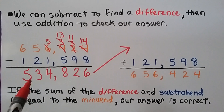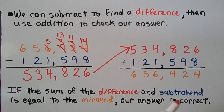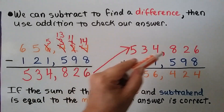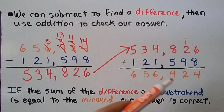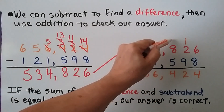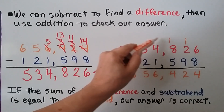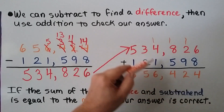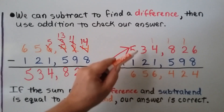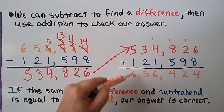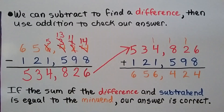Now we can take this difference and put it up here as an addend. We start adding in the ones place. 6 plus 8 is 14, so we regroup that 1. We count up: 9, 10, 11, 12 — regroup the 1 and put the 2 down. 8 plus 5 is 13, plus 1 more is 14 — regroup the 1 and put the 4 here. We count up: 4, 5, 6. 3 plus 2 is 5, and 5 plus 1 is 6. We have 656,424, which was our original minuend — we know we did it correctly.